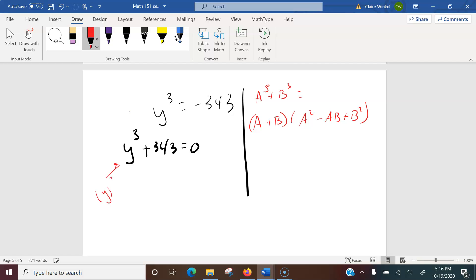This is the quantity y cubed, so in our formula a is equal to y. I'm sorry, 343 is the same as 7 cubed, so in my formula b is equal to 7.